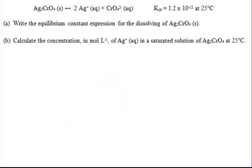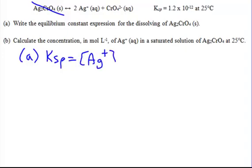Let me show you a different type of problem — a Ksp problem. This is silver chromate dissociating. The first thing we want to do is write our equilibrium expression. Ksp is equal to Ag+ squared times CrO4 2-, because solids don't go into the Ksp expression. This expression is never, ever different, and it's the first thing you want to write.